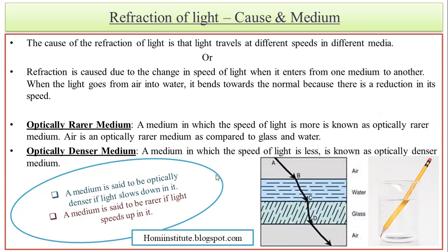Today we are going to discuss the medium — what medium is, what kinds of medium there are, and what classifications medium has. When we talk about medium, it is actually the pathway or the thing through which light has to travel or pass. We had already studied that medium can be classified as transparent medium, translucent medium, or opaque medium.